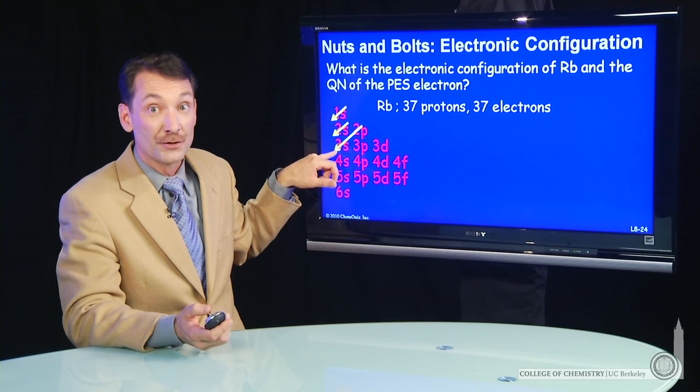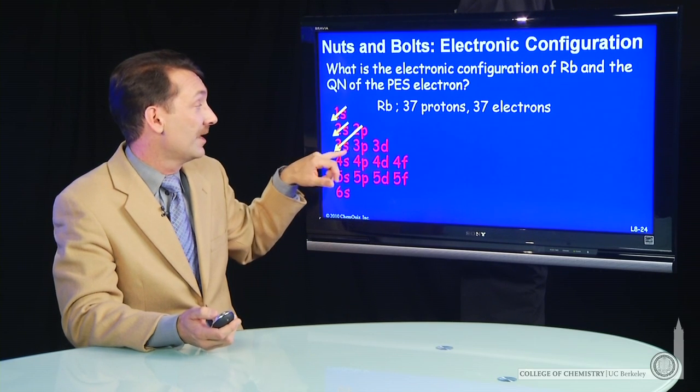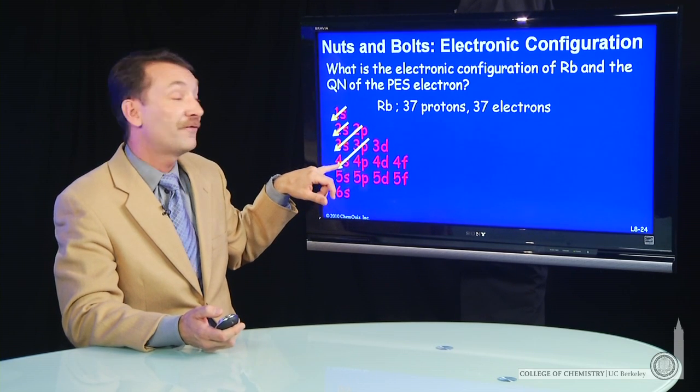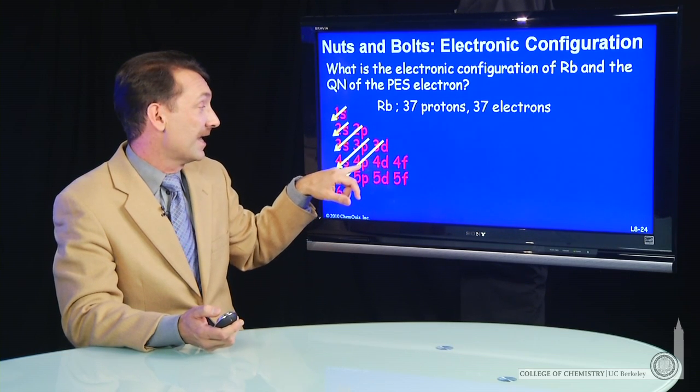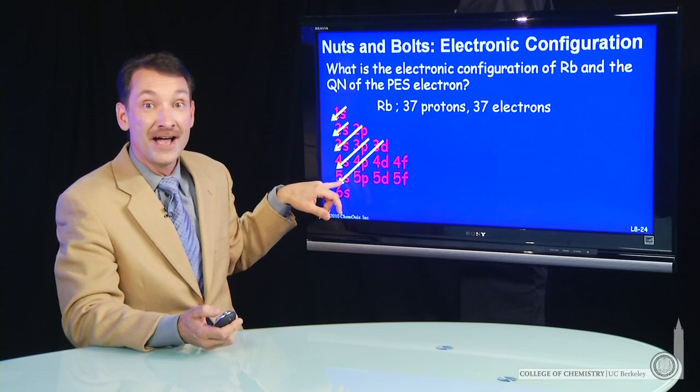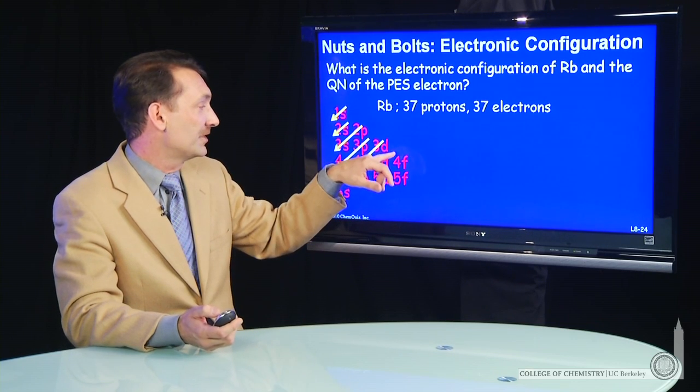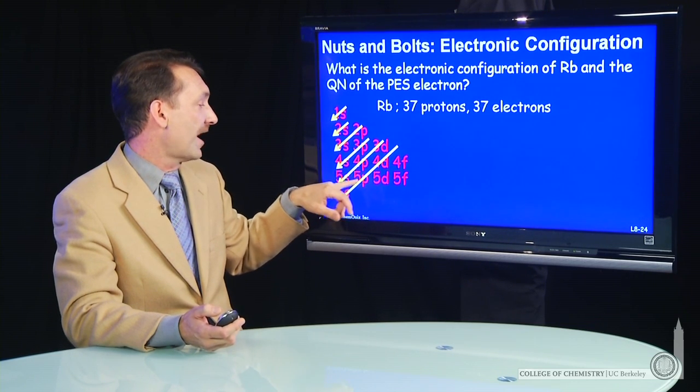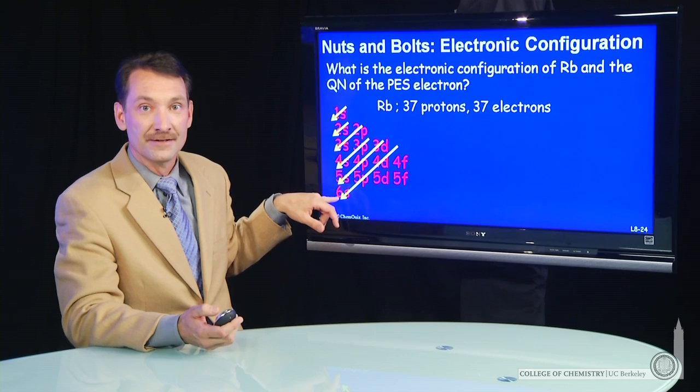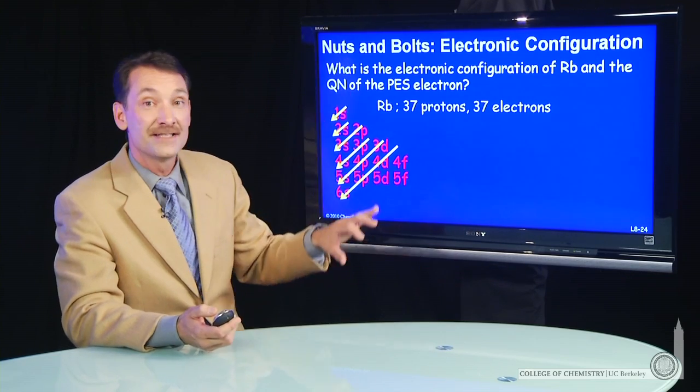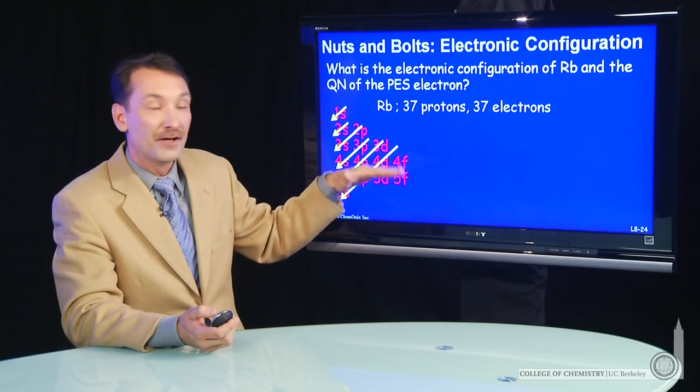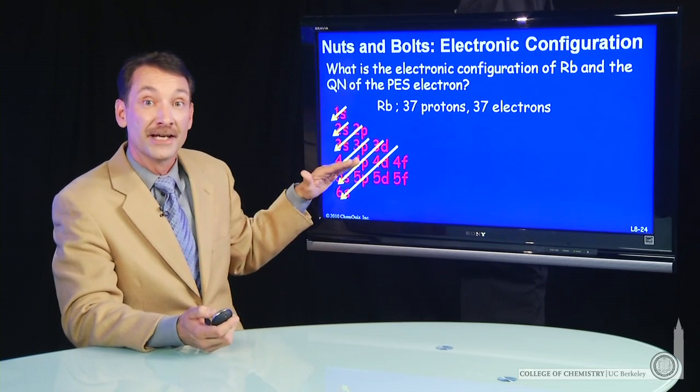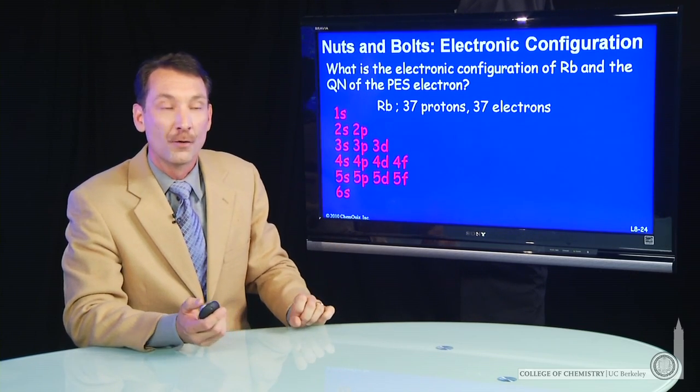That's obvious, that just goes by principle quantum level. Then the 3p, then the 4s, then the 3d, then the 4p, then the 5s. And that would continue - you would do 4d, 5p, 6s. So this little device with the straight lines for the principle quantum level and the diagonal lines for filling helps remember how to fill orbital shells.